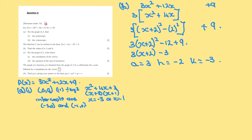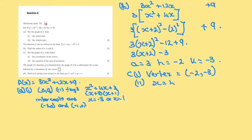For the graph of f of x, the coordinates of the vertex are at (h, k), so the vertex is equal to (minus 2, minus 3). The equation of the axis of symmetry is at x equals h, therefore it's at x equals minus 2.